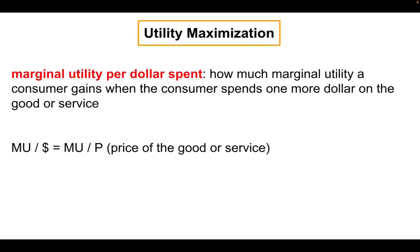Now let's turn to utility maximization and the concept of marginal utility per dollar spent. As you get older and have your own money, you'll think about how to get the best bang for your buck with a limited amount of money. Marginal utility per dollar spent is how much marginal utility or benefit a consumer gains when spending one more dollar on a good or service. The formula is: marginal utility per dollar spent equals marginal utility divided by the price of the product.